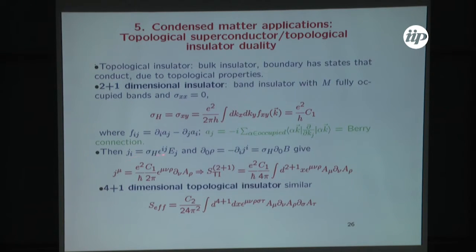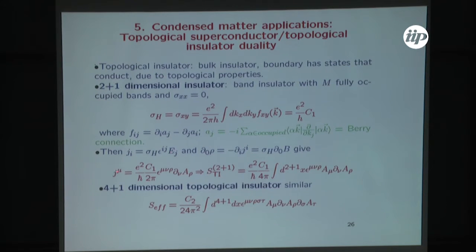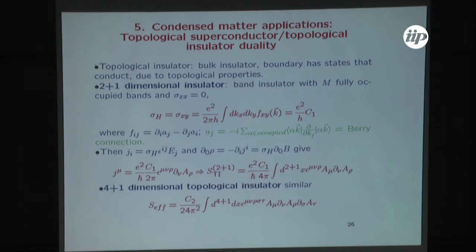Writing the usual relation between current and electric field — which in the case of materials that have a Hall effect is a matrix — and considering also the conservation equation together with Maxwell's equations, one can obtain the component that relates J_0 with B. Everything can be put together into the relativistic invariant notation: J_mu = epsilon_{mu nu rho} d_nu A_rho. If I think of the current as the variation of an effective action with respect to the gauge field, then the effective action for this topological insulator is Chern-Simons, where C1 came from the Hall conductivity that was this quantized form. The coefficient of the Chern-Simons action is therefore a quantized number.